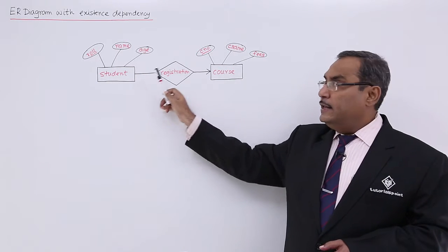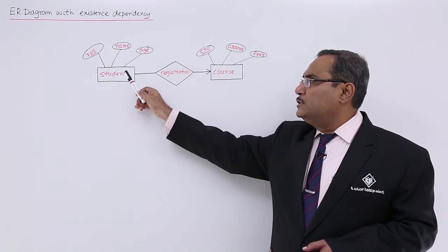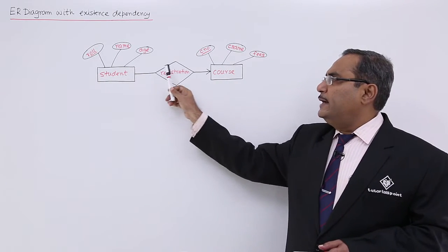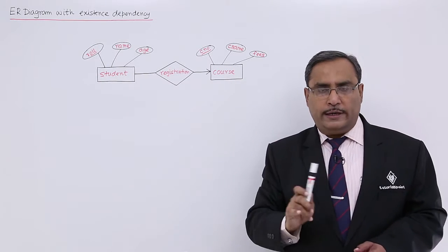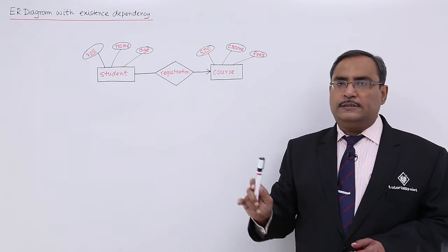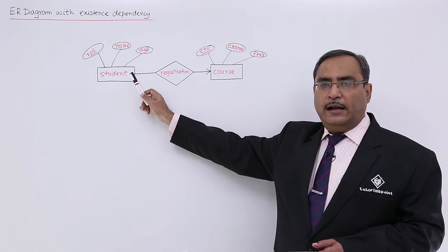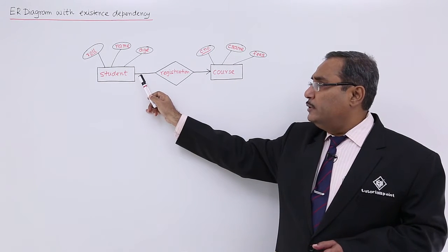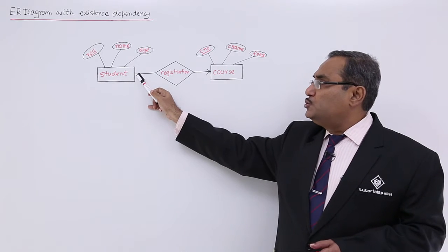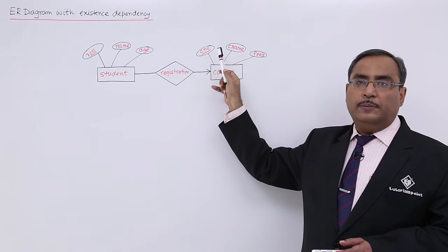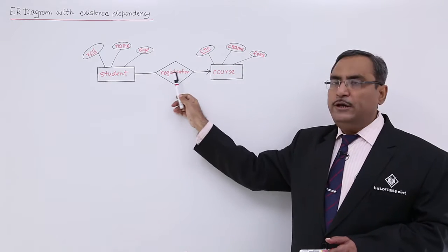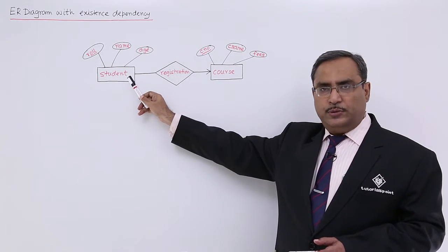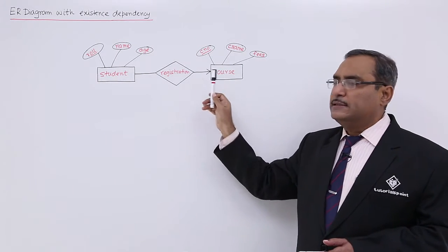That indicates that against one course, multiple students can take admission. It also indicates that a student can take admission in one course only — it is not many-to-many. A course can have multiple registrations of students, and a student can have a single course at a time. So here it is many-to-one.